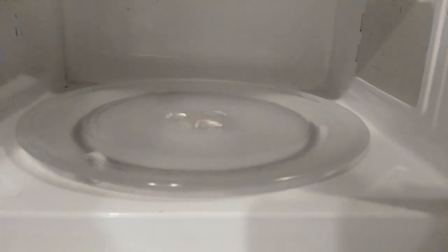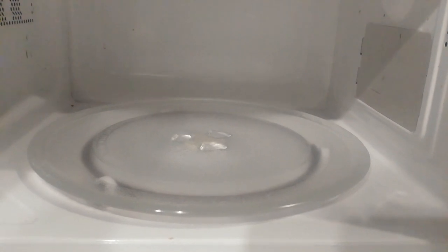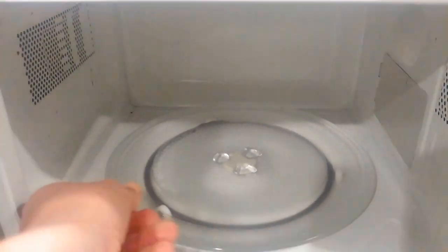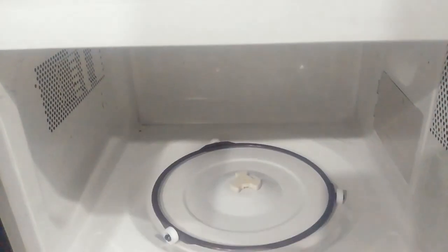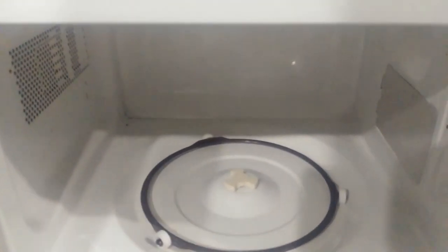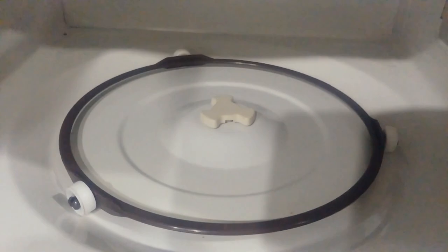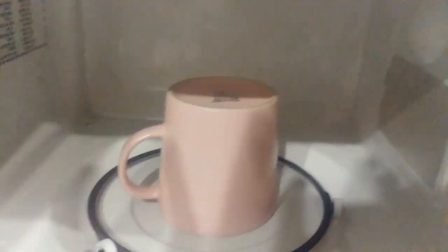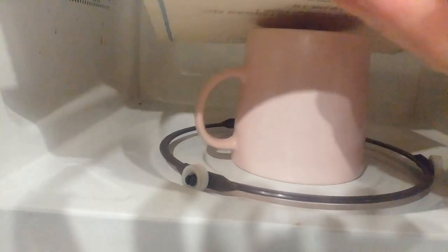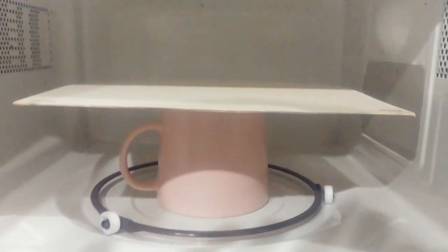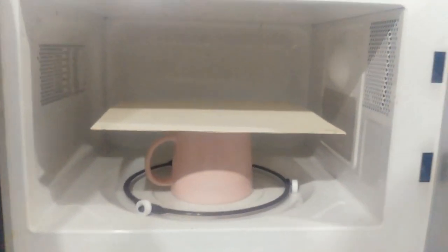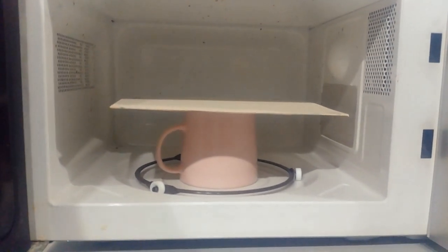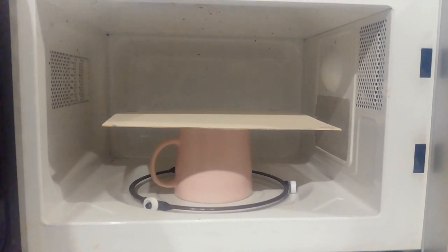In this experiment to measure the speed of the microwaves, you need to bypass this rotating mechanism because we want a pattern of where the hot spots actually are. So the way that we actually did it is that we took off the tray, covered the rotating motor with a glass or a cup, and placed a piece of cardboard on top of the cup. You could also use a box of the right size or a piece of plastic of the right size, as long as it doesn't contain any metal because that's dangerous.